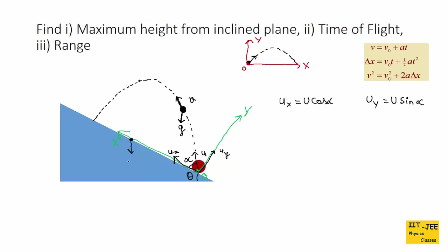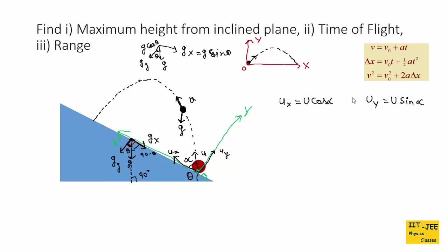Gravity acts downward. The component along the incline is gx and the component perpendicular to the incline is gy. Looking at the right-angle triangle, this angle is theta, this is 90 degrees, so the other angle is 90 minus theta. Therefore, gy = g cos theta (the component along angle theta) and gx = g sin theta.